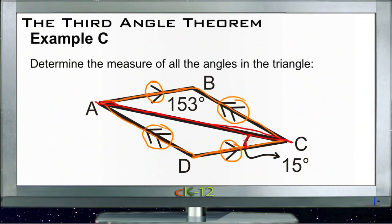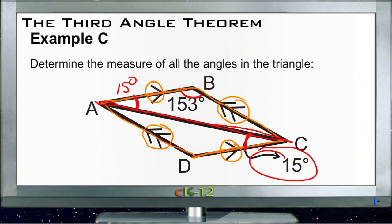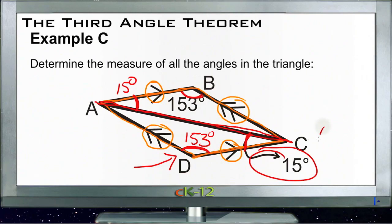So if the angle down at C is 15 degrees, then its alternate interior angle up here must also be 15 degrees. And if this upper right angle is 153 degrees, then the corresponding angle down here must also be 153 degrees. That means for each of the two triangles — ADC and ABC — we have two of the three angles: one angle of 153 degrees and one of 15 degrees.